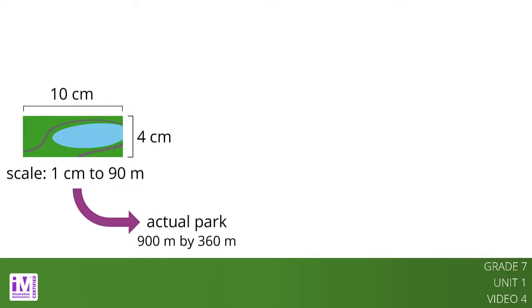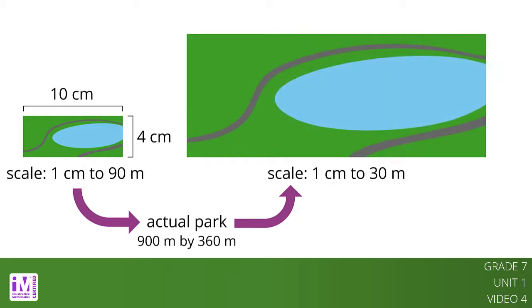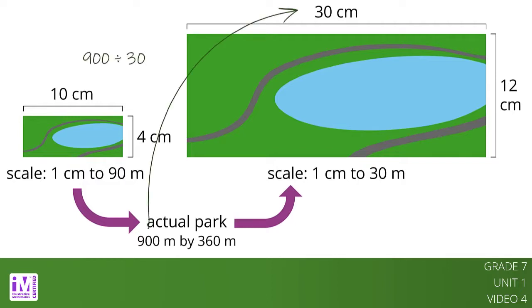Suppose we want to make another scale drawing of the park where the scale is 1 centimeter to 30 meters. This new scale drawing should be 30 centimeters long by 12 centimeters wide, because 900 divided by 30 equals 30 and 360 divided by 30 equals 12.